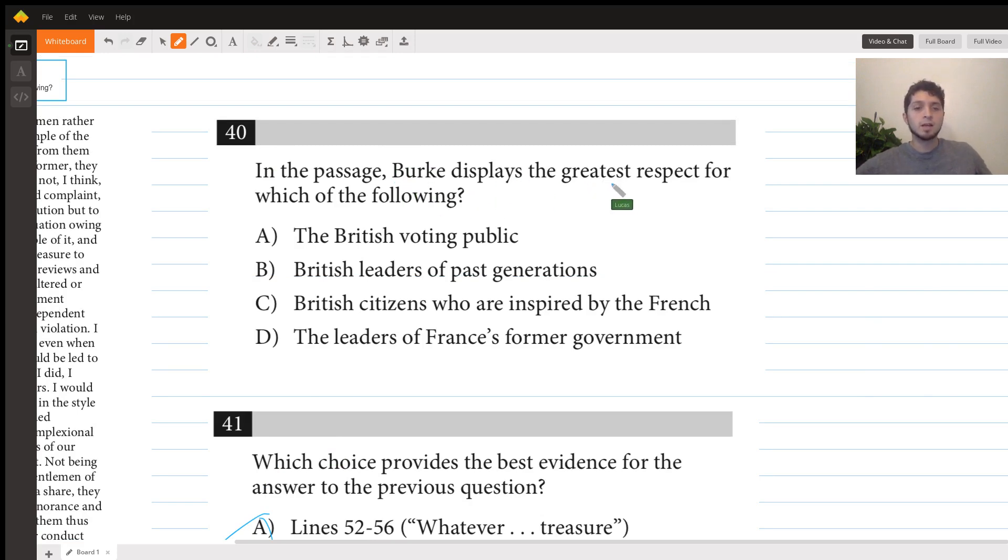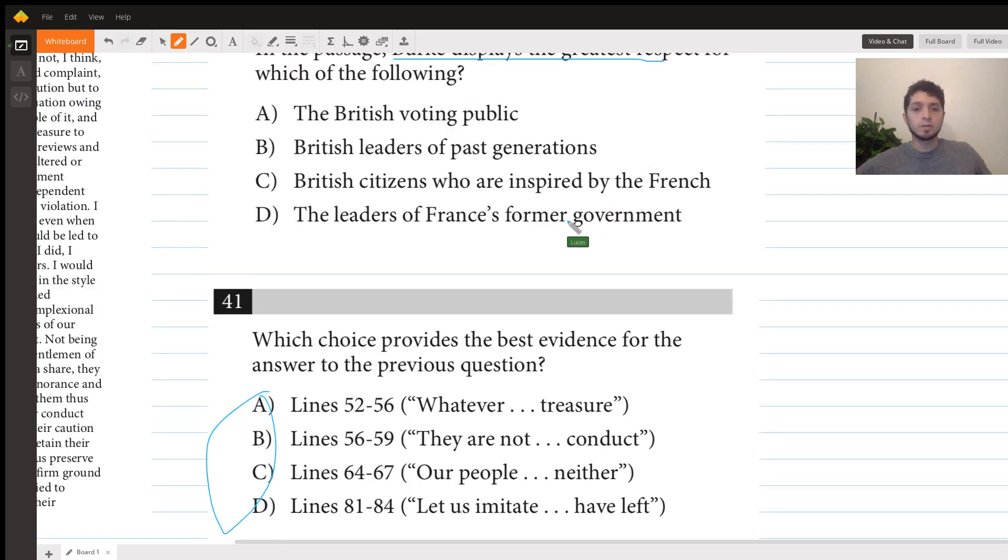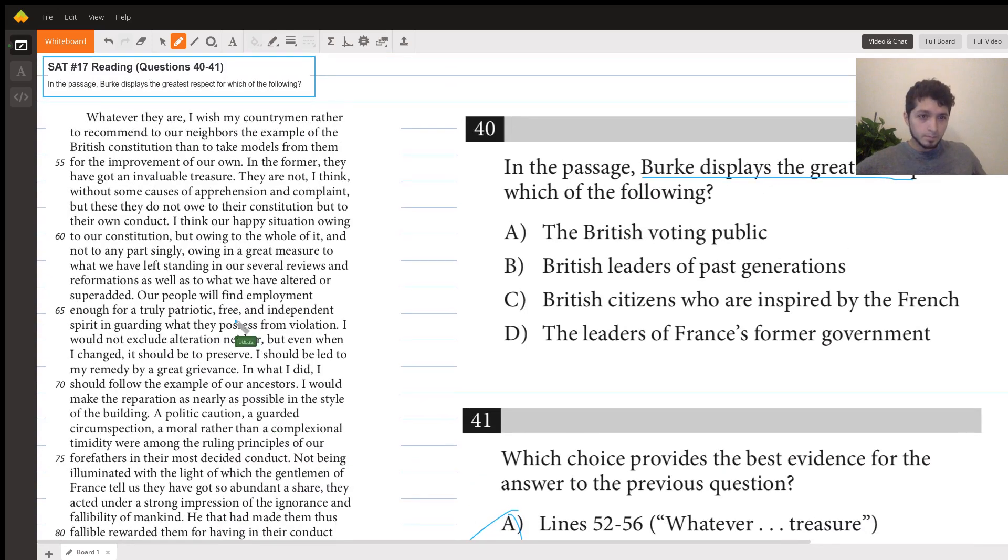So 40 says 'In the passage, Burke displays the greatest respect for which of the following?' We need to look for text that shows Burke displaying the greatest respect. Let's start with 52 to 56, which is down here: 'Whatever they are, I wish my countrymen rather to recommend to our neighbors the example of the British constitution and to take models from them the improvement of our own.'